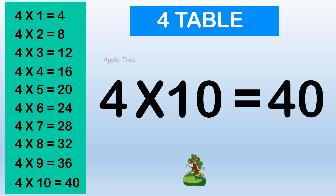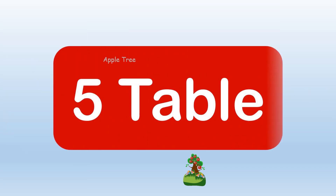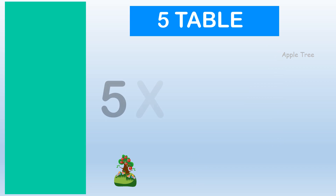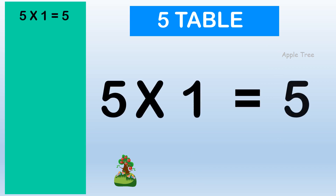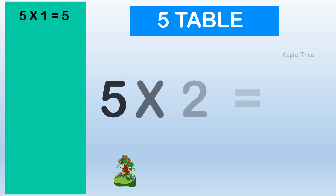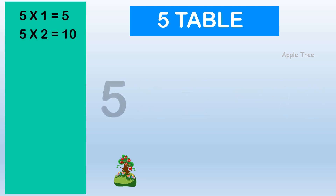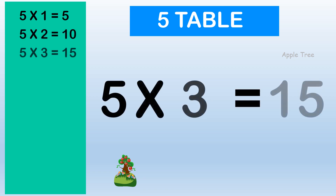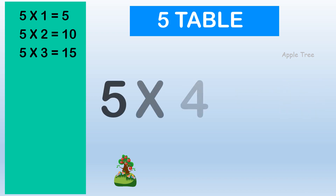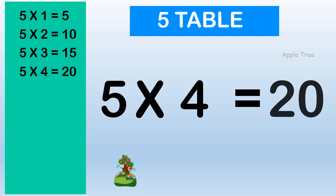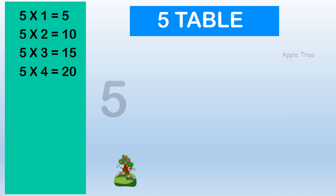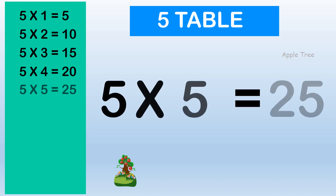Table for 5. 5 × 1 = 5, 5 × 2 = 10, 5 × 3 = 15, 5 × 4 = 20, 5 × 5 = 25.